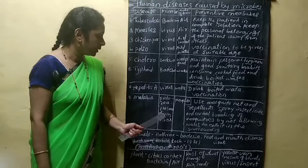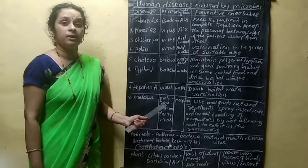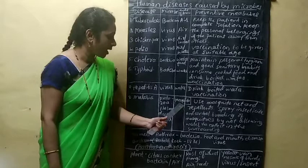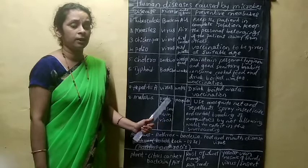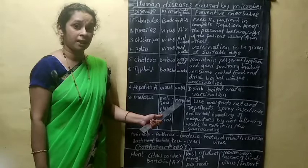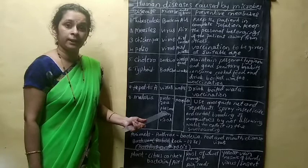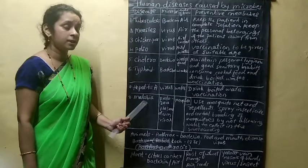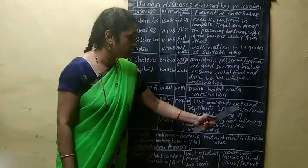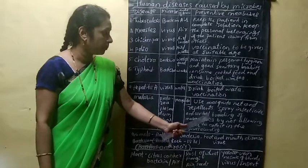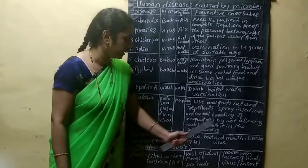Malaria is caused by the protozoa Plasmodium vivax. It causes the disease called malaria and is transmitted through the female Anopheles mosquito. The mosquito is the mode of transmission, while Plasmodium vivax is the actual cause of the disease.